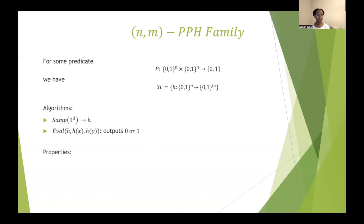We also have the following properties. For correctness, we have that for every x, y, the probability that eval outputs something different than p is negligible.